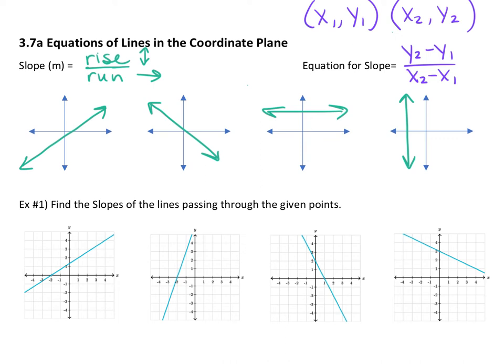What I want you to notice is that first one — we're always going left to right. When you start at the left side and move to the right, and you're going up, that's a positive slope. If from left to right you're on your way up, it's positive. So what do you suppose that second one is? A negative slope. If you go left to right and work your way down, that will be a negative slope.